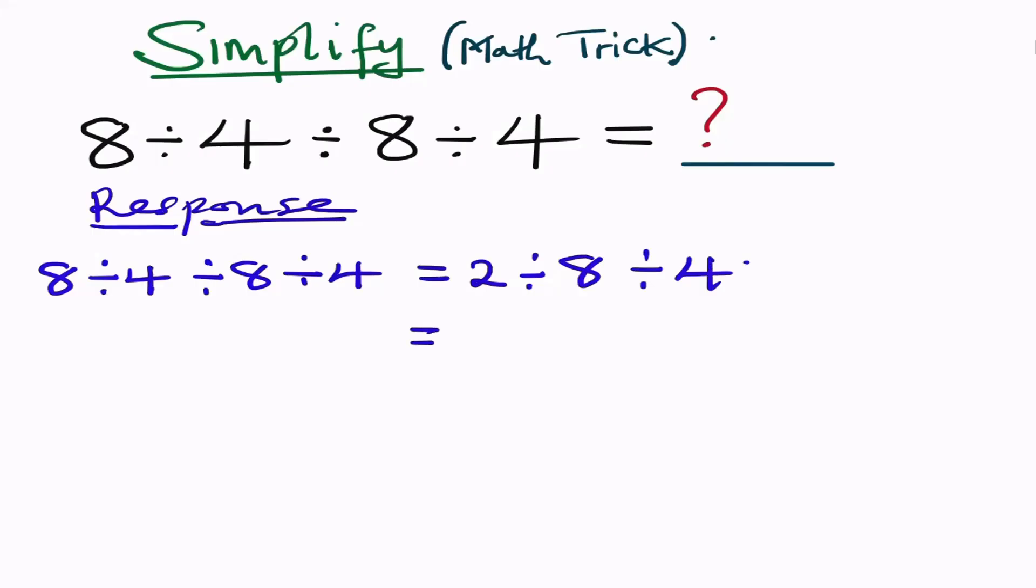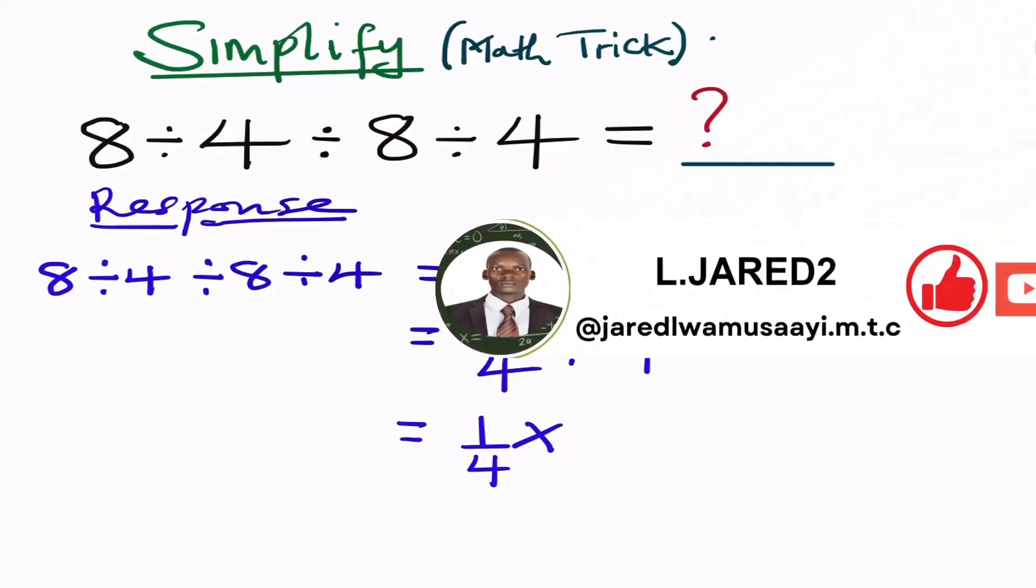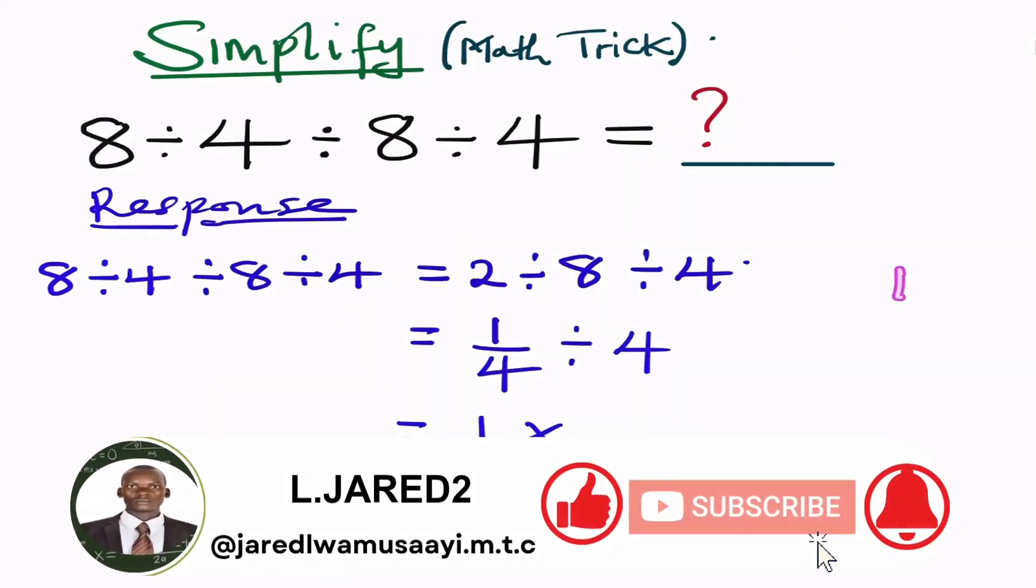So from here, still from the left hand side, if we get this 2 divided by 8, we are going to have a quarter. When we combine this 2 and 8, 2 divided by 8, we shall get 1 out of 4, still divided by a 4. The next step we are going to have a quarter. Since this is a division sign, let us change it to be a multiplication sign, then we get a reciprocal of 4. The reciprocal of 4 is a quarter.